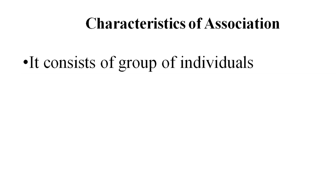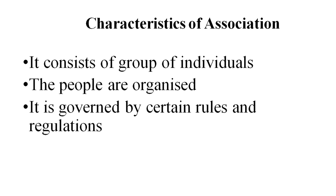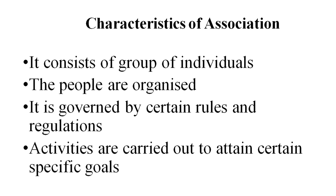The characteristics of an association: it consists of individuals who are organized, and it is governed by certain rules and regulations. Associations' activities are carried out to attain certain specific goals. Associations are specifically formed or organized by people for the pursuit of certain goals, with specified rules which govern the functioning of these associations, and specific activities are carried out to follow these goals.